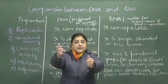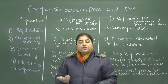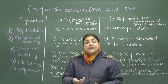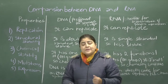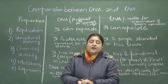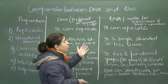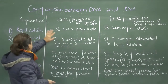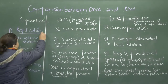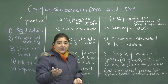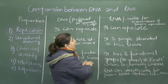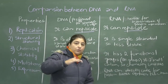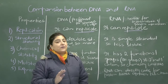Now having seen the properties that genetic material should possess, let's compare DNA and RNA to figure out which is the better genetic material. When we analyze them on the basis of replication, both DNA and RNA can replicate. So the property of replication is satisfied by both.